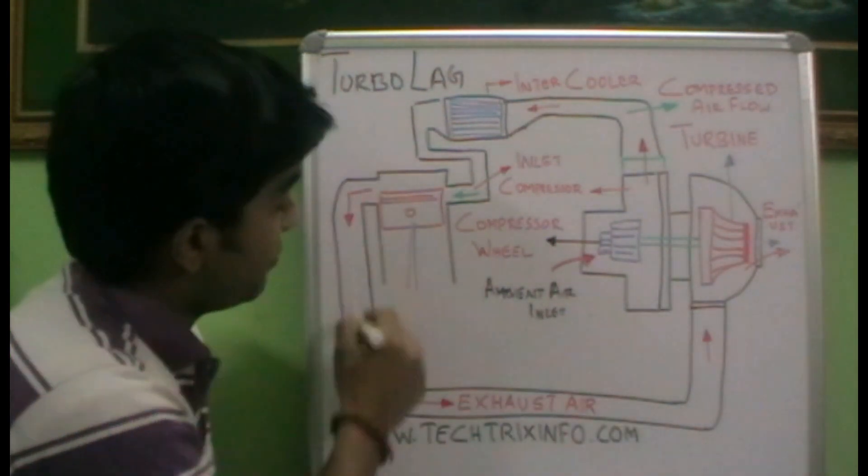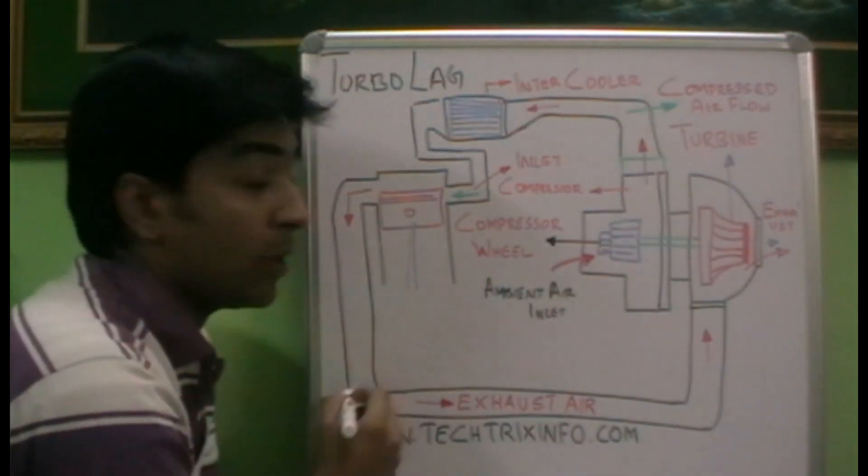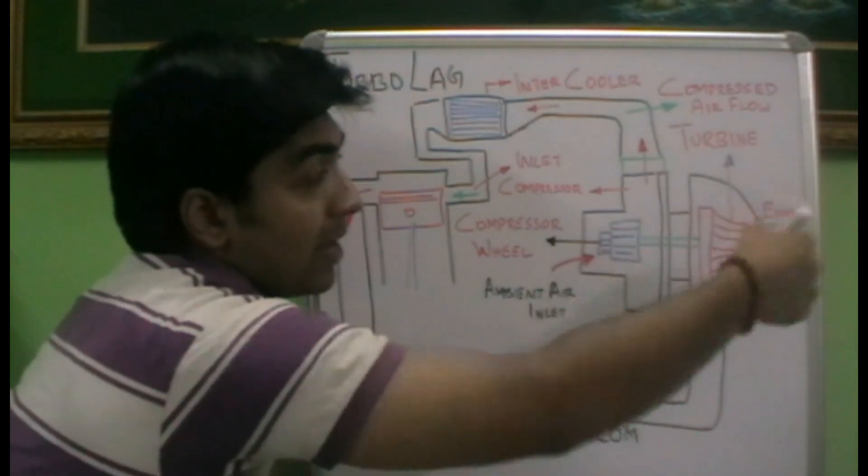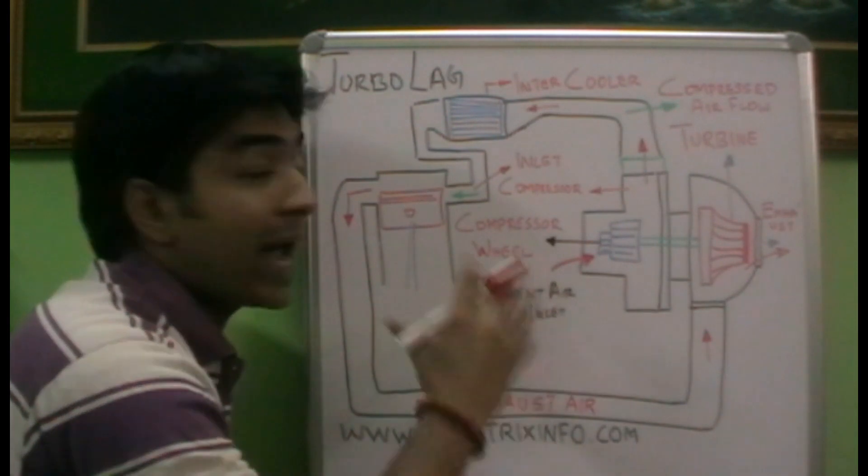The exhaust gas coming from the engine powers this turbine. That means exhaust gas needs to get to a particular velocity so that the turbine rotates. It actually provides the turbocharger unit to work and the boost of additional power is produced.